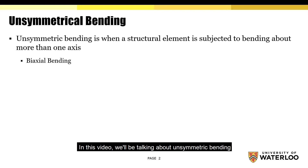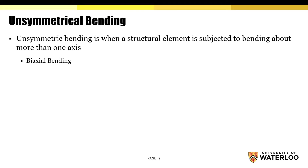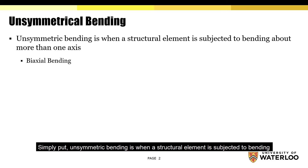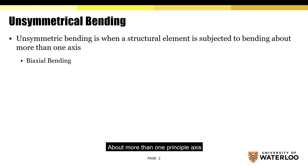In this video, we'll be talking about unsymmetric bending. So what is unsymmetric bending? Simply put, unsymmetric bending is when a structural element is subjected to bending about more than one principal axis. It's also commonly referred to as biaxial bending.